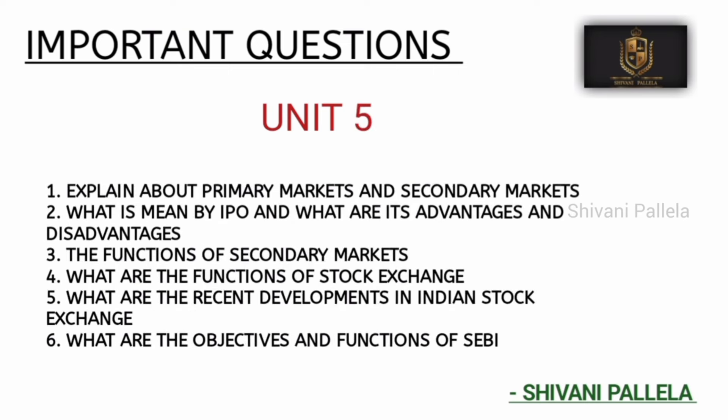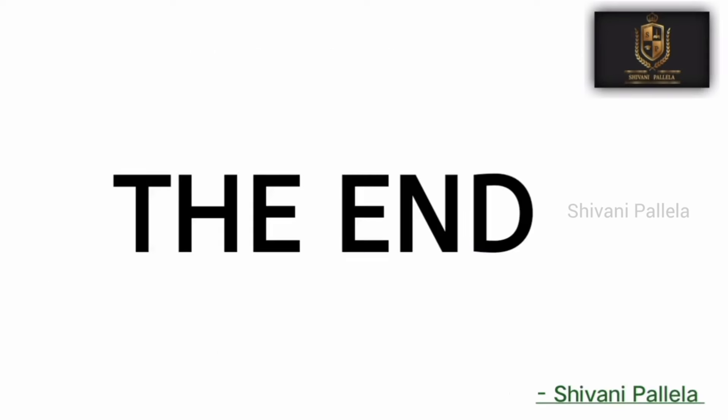For Unit 5 I have given six questions because it is an important chapter. Objectives and functions of SEBI is the most important question from this unit. Functions of secondary markets is also important, and primary market versus secondary market differences are three key questions from Unit 5. Indian stock markets — the various instruments available and the various changes happening in the Indian stock market — is also an important question, and it is a generalized topic you can write in your own words.